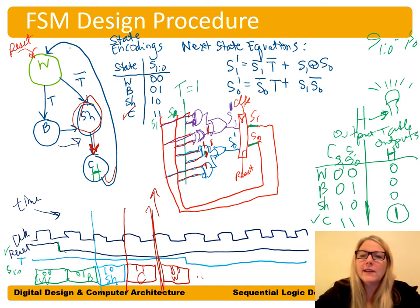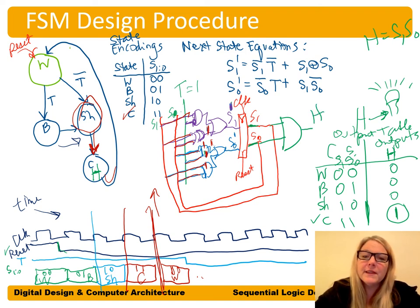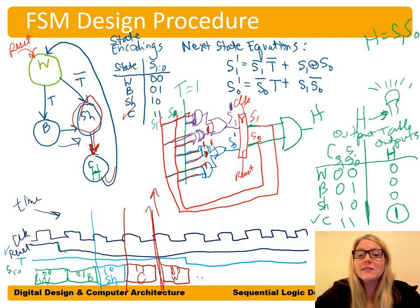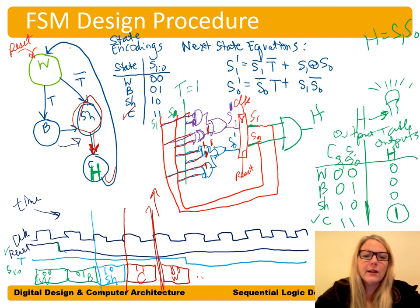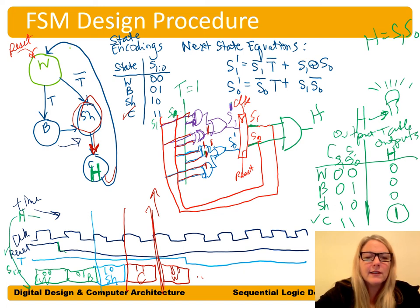We'll also show examples of the Mealy FSM, where that is combined into a single state transition and output table. Then we select our state encodings and rewrite the state transition table as an encoded state transition table, plus an encoded output table.